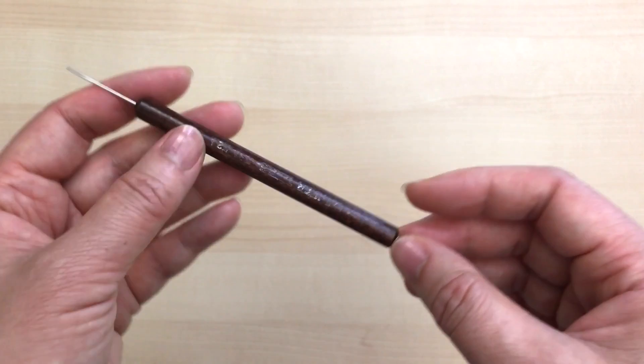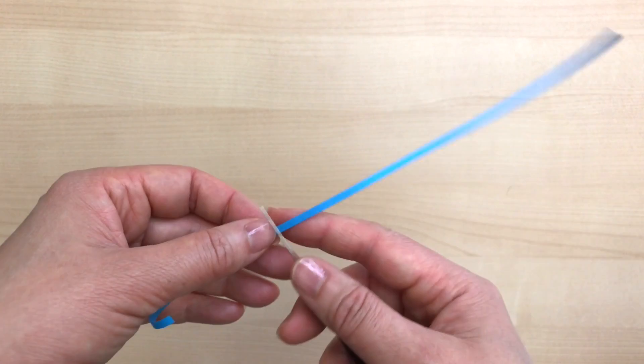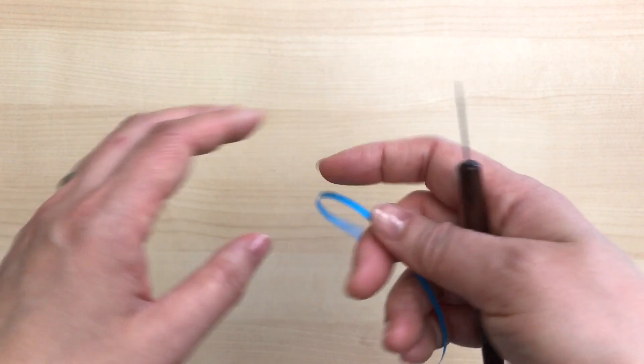Now whenever I start a quilling strip, I tend to just gently soften the strip. I don't know why, my fingers just like the way the feel of the paper feels after I've softened the strip gently like this.